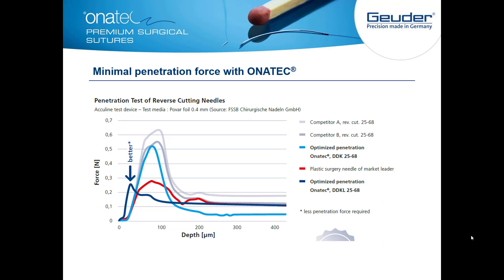In this graph, you can see that only low penetration force is needed for the Onatec suture materials, indicating the best possible characteristics for ophthalmic surgery. Not only is the penetration force extremely low, but the depth is also small, which results in a steep rise. That translates to a smooth and easy tissue penetration.